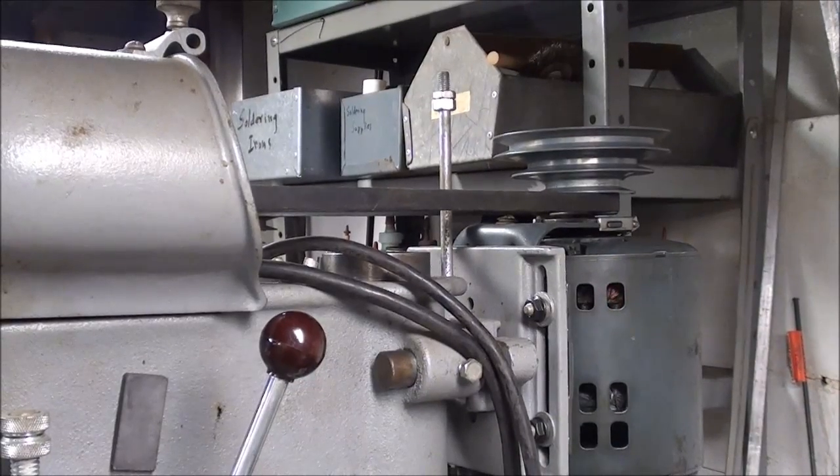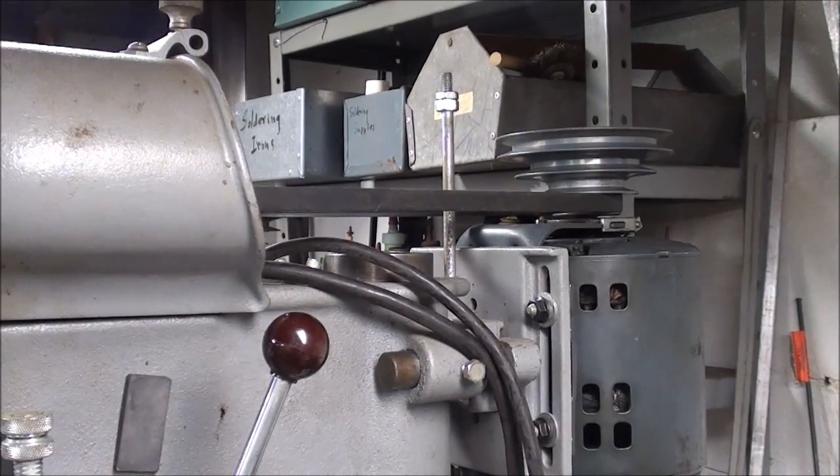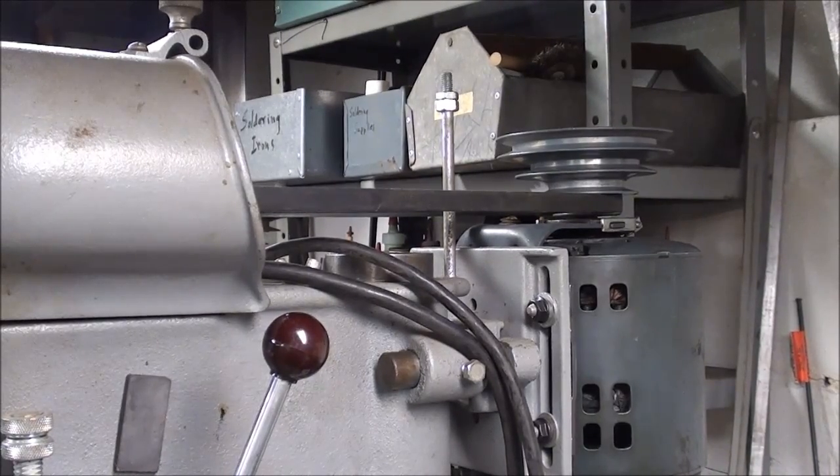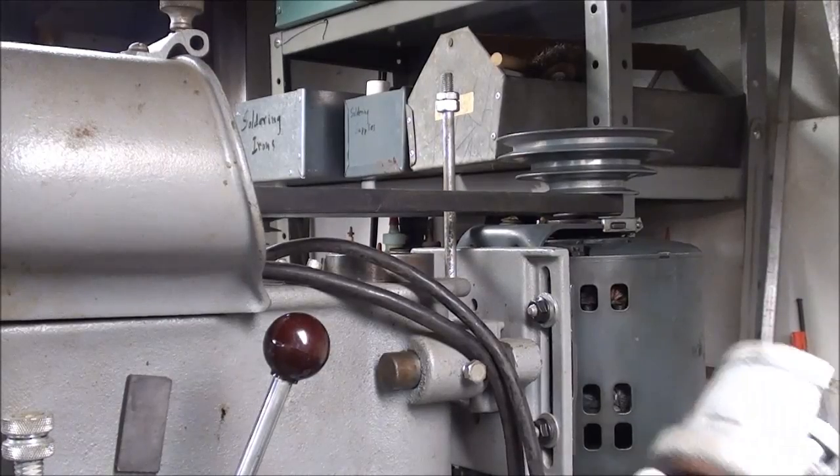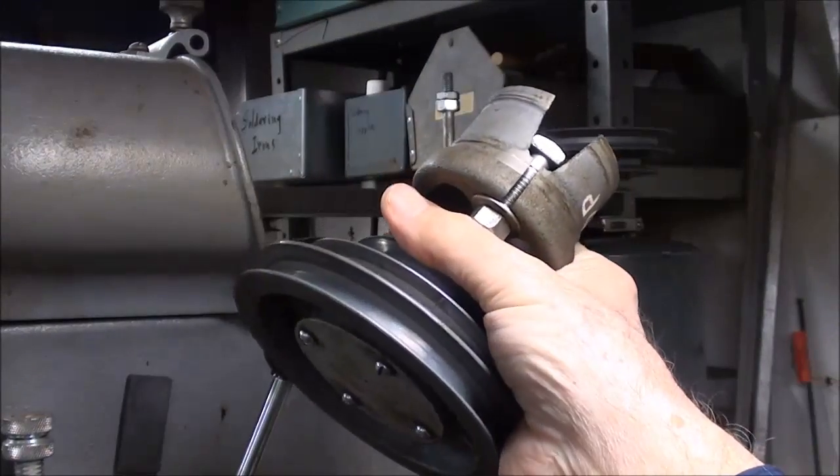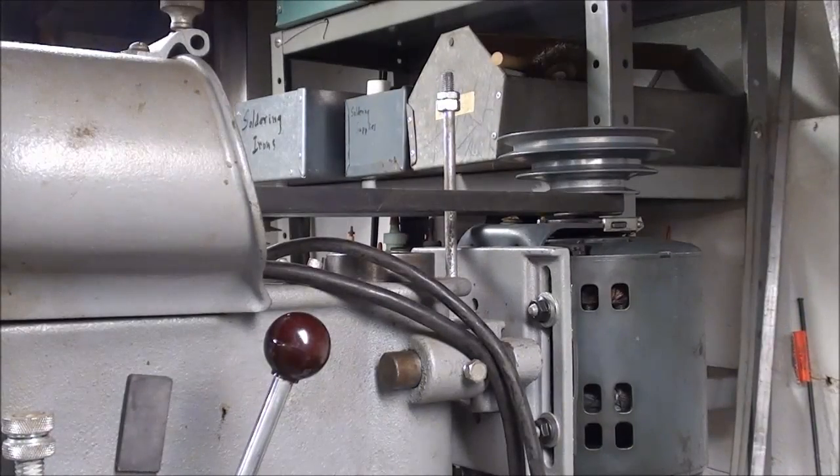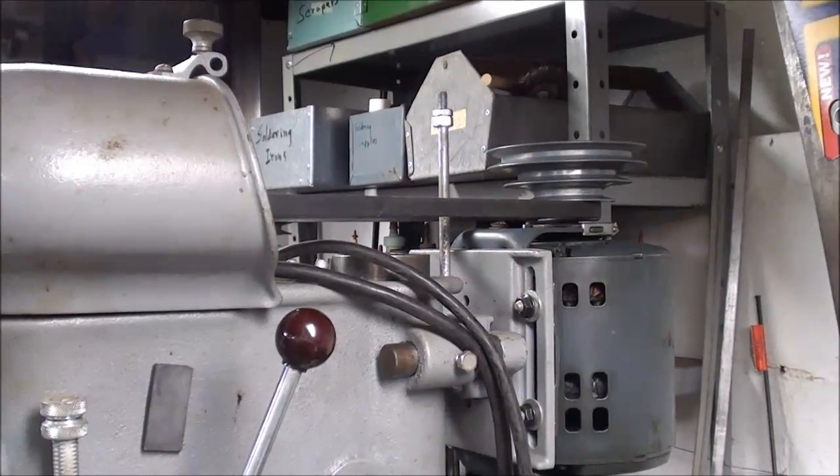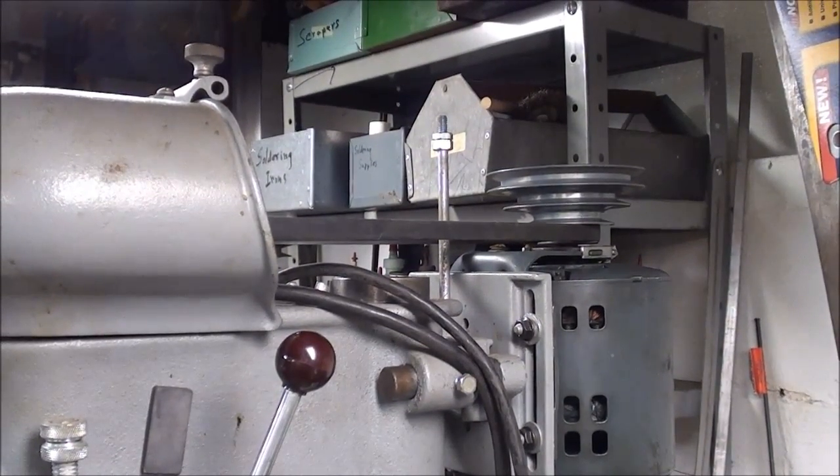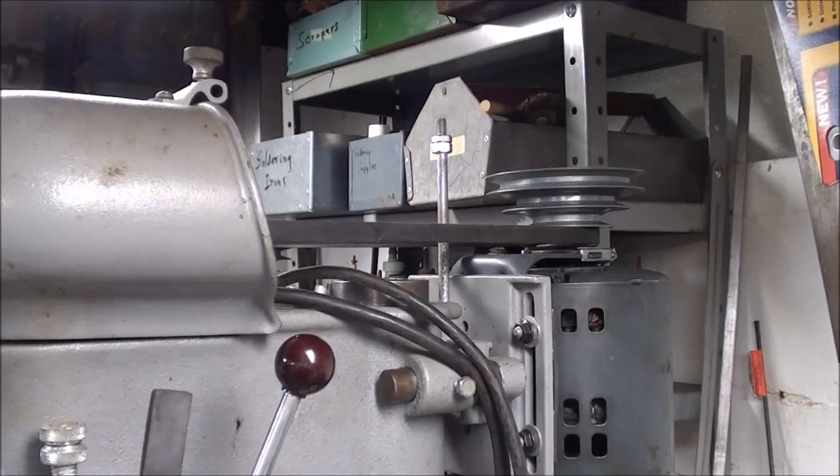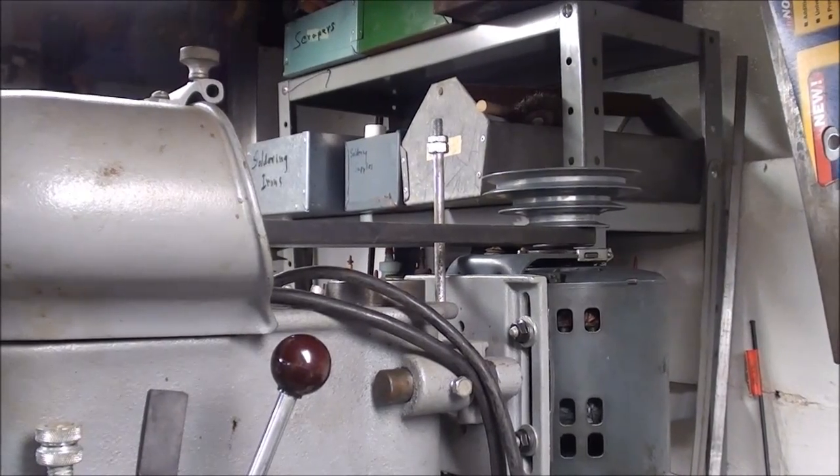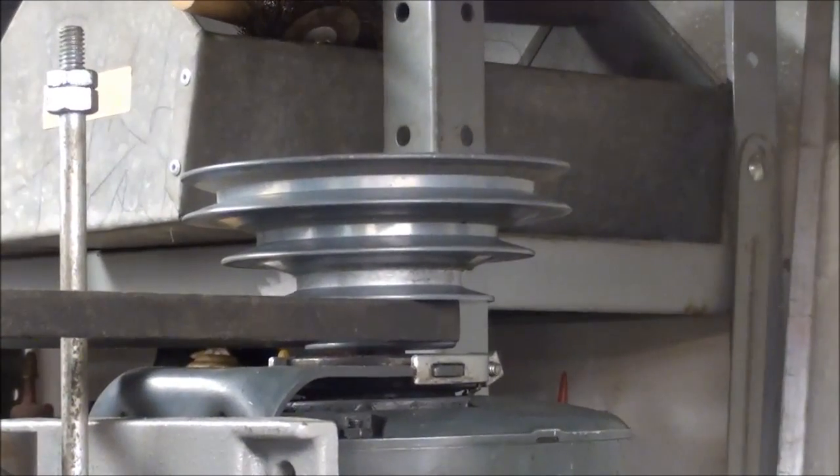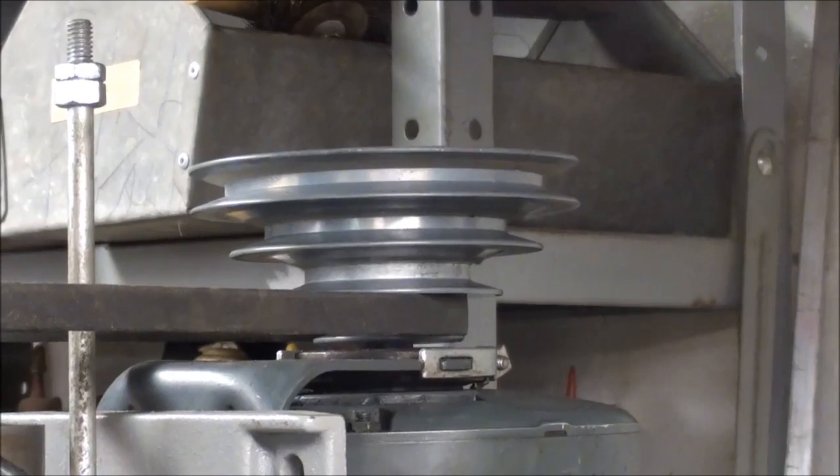Now, there are three or four other videos on this variable frequency drive, so be sure and watch those if you have not already. But in those videos, I mentioned that I was going to remove this idler pulley and the extra belt from this drill press, and I have done so. So now we're down to two step pulleys and one belt, and I'm using the lowest groove on this four groove step pulley.